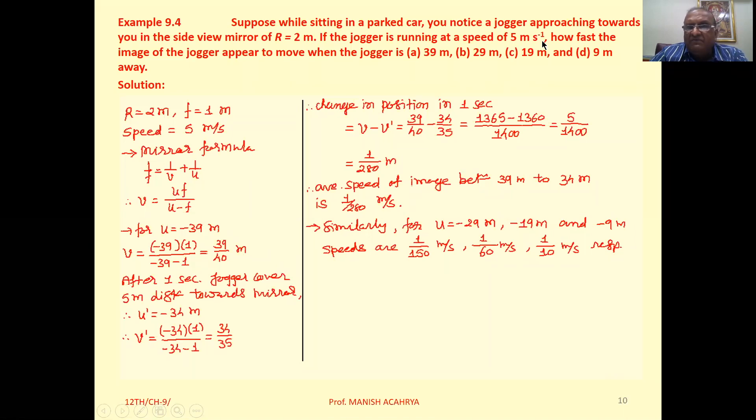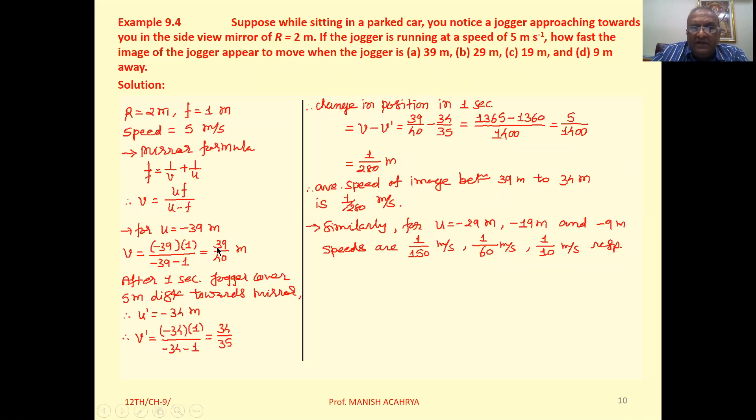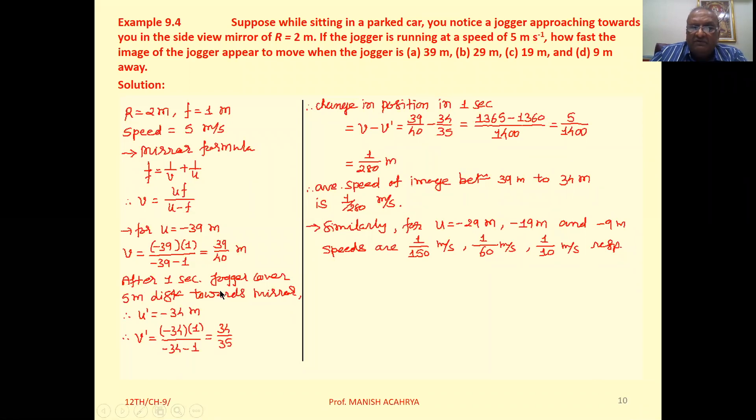The speed is 5 meter per second. So 1 second later, the object is 5 meter closer to the car. So after 1 second the jogger covers 5 meter distance towards the mirror. After 1 second, the position of the jogger is 34 meter.